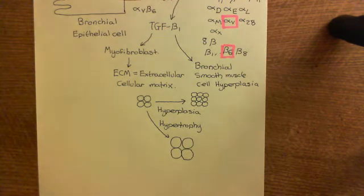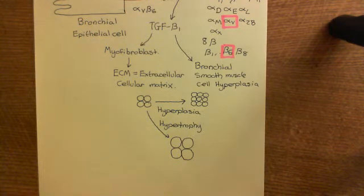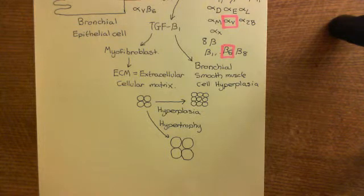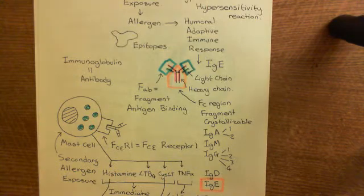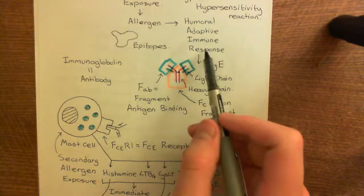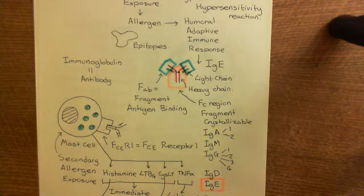That summarizes the late phase. There's one more thing to discuss: the secondary immune response. When we discussed first exposure to the allergen, we launched a primary adaptive humoral immune response producing IgE — a type 1 hypersensitivity reaction. However, after a few weeks without allergen exposure, the humoral adaptive immune response fades away.